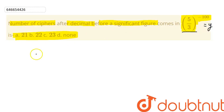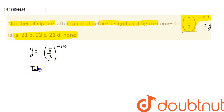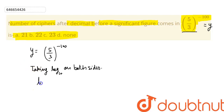Let us assume this number is equal to y. So y = (5/3)^(−100). To solve this, we are going to take the logarithm to the base 10 on both sides. On the left-hand side we get log₁₀(y), and on the right-hand side we get log₁₀[(5/3)^(−100)].